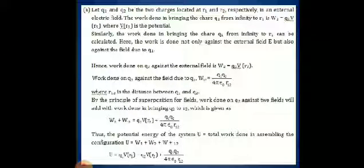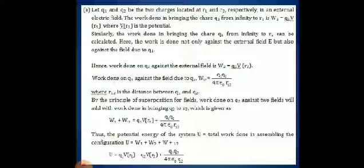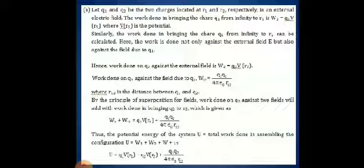Then, the work done on q2 against the field of q1 is given by W12, which is equivalent to 1 by 4 pi epsilon 0 times q1 q2 divided by r12, where r12 is the distance between charges q1 and q2. So, the total work done in bringing q2 against the two fields, by the principle of superposition, is equivalent to W2 plus W12, which equals q2 into V of r2 plus q1 q2 divided by 4 pi epsilon 0 r12.